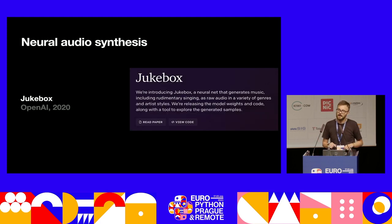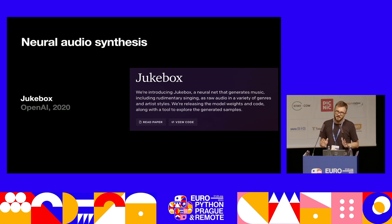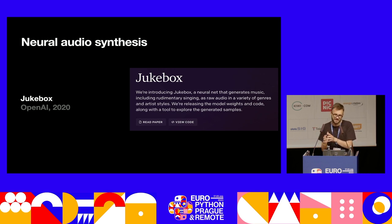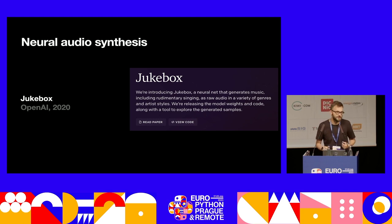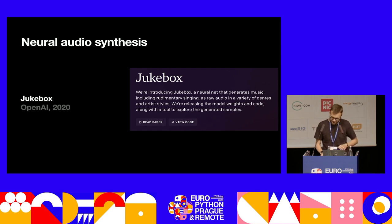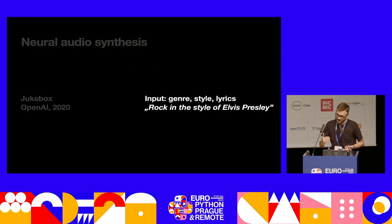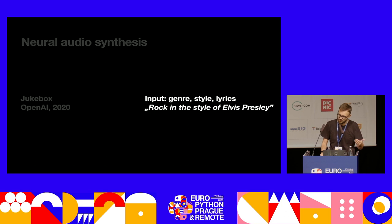Let's segue to 2020. The idea of how to do neural audio synthesis has changed quite a lot, because nowadays we are mostly using encoder-decoder models. We are trying to come up with a compressed space that kind of encapsulates the character of our audio, and then decode and produce some music out of it. One of the models that works in this fashion is Jukebox by OpenAI. It takes as input the genre, the style, and some lyrics. Let's listen to an example of how rock in the style of Elvis Presley could sound when hallucinated by OpenAI's model.